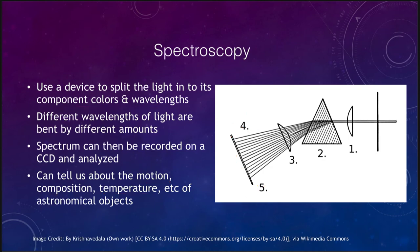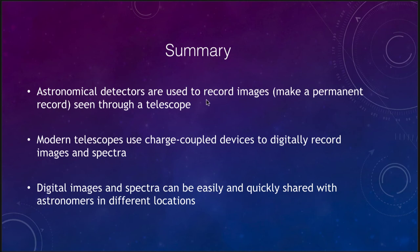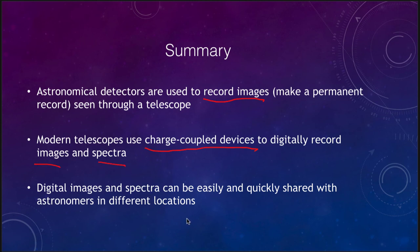To summarize: we have astronomical detectors used to record images and make a permanent record of what is seen through the telescope. Early detectors used the eye and drawing, which were very subjective. More modern ones like the photographic plate and the CCD are much less subjective. The CCD, or charge coupled device, is the primary detector used now for recording images and spectra. Digital images can be very easily and quickly shared with astronomers around the world, allowing for immediate feedback and adjustments for future observations. That concludes our lecture on astronomical instrumentation — we'll be back next time for another topic in astronomy.